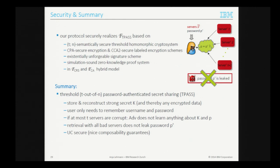To sum up, we have proposed a T-out-of-N password authenticated secret sharing scheme where the user can store and reconstruct a strong secret K based only on a username and password, without relying on any trusted user storage. Even if the user encounters bad servers, those servers will not learn their password attempt P prime. Everything is proven secure in the UC framework, providing nice composability guarantees. Thank you.